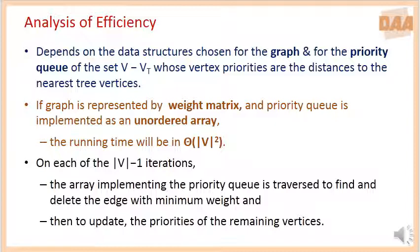The efficiency of the Prim's algorithm depends on the data structures used to represent the graph as well as the priority queue. The priority queue is used to select the edges with the minimum weight. As we know, the efficiency depends on the data structures chosen for graph and for the priority queue of the set V minus VT, whose vertex priorities are the distances to the nearest tree vertices.